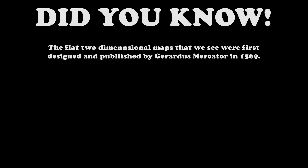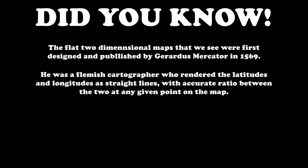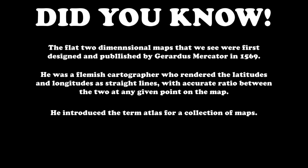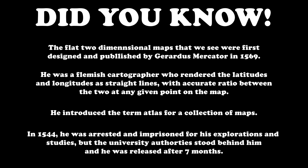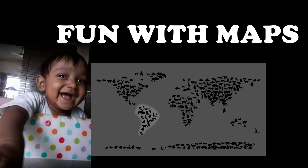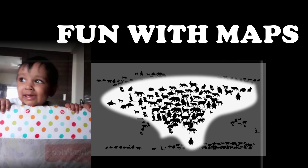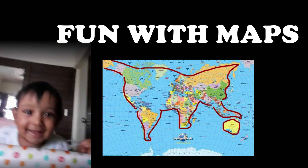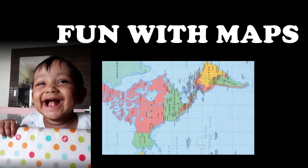Thank you, ma'am. Thanks a lot. The national maps that we see were first designed and published by Gerardus Mercator in 1569. He was a Flemish cartographer who rendered the latitudes and longitudes as straight lines with accurate ratio between the two at any given point on the map. He introduced the term 'Atlas' for a collection of maps. In 1544, he was arrested and imprisoned for his explorations and studies, but the university authorities stood behind him and he was released after seven months. See you next time. Bye.